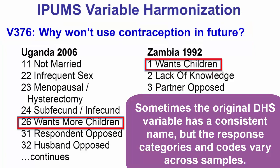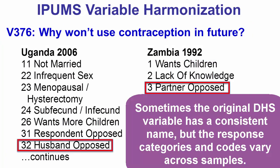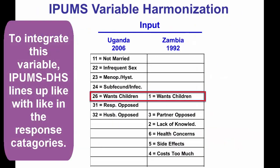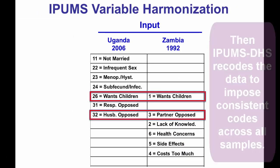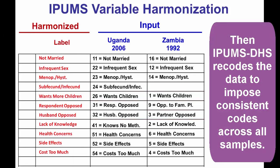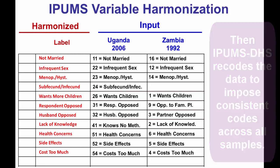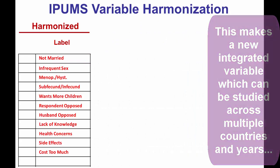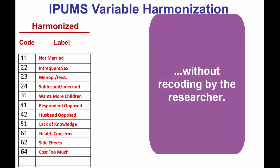Sometimes the original DHS variable has a consistent name, but the response categories and codes vary across samples. Consider the DHS variable V376 about why a woman won't use contraception in the future. To integrate this variable, IPHMS DHS lines up like with like in the response categories. Then IPHMS DHS recodes the data to impose consistent codes across all samples, creating a new integrated variable which can be studied across multiple countries and years without recoding by the researcher.